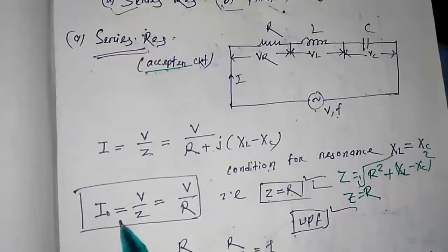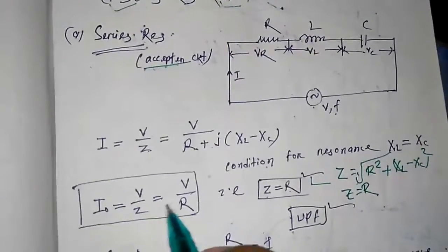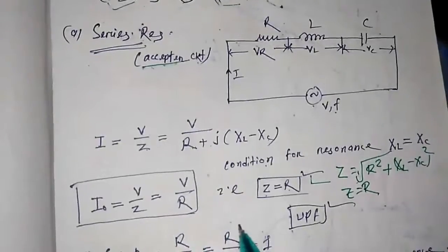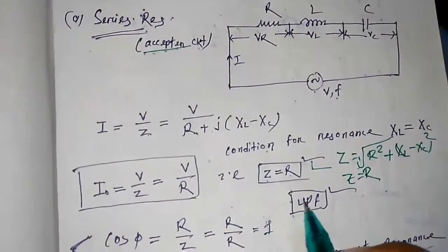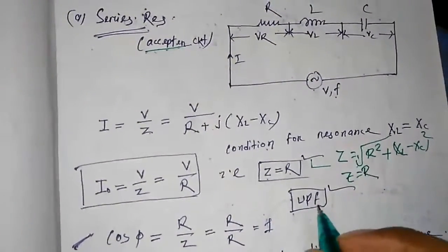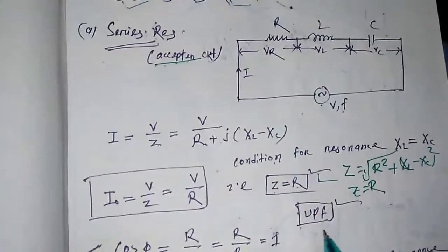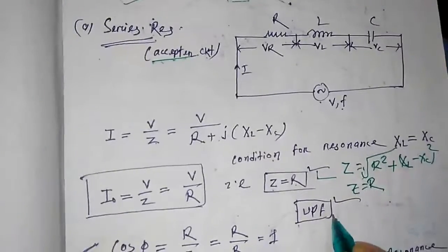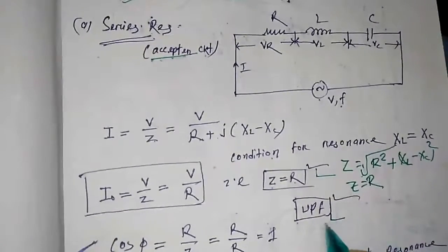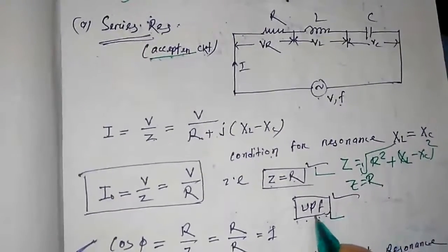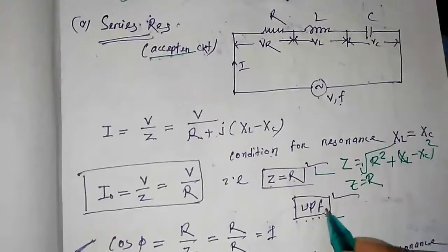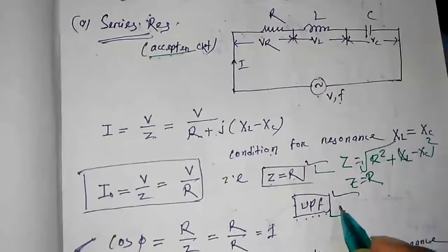So the current will be V upon Z, that is equal to V by R. That means this is a condition for a pure resistance. That means the power factor will be of unity, UPF, as it is a pure resistive circuit.